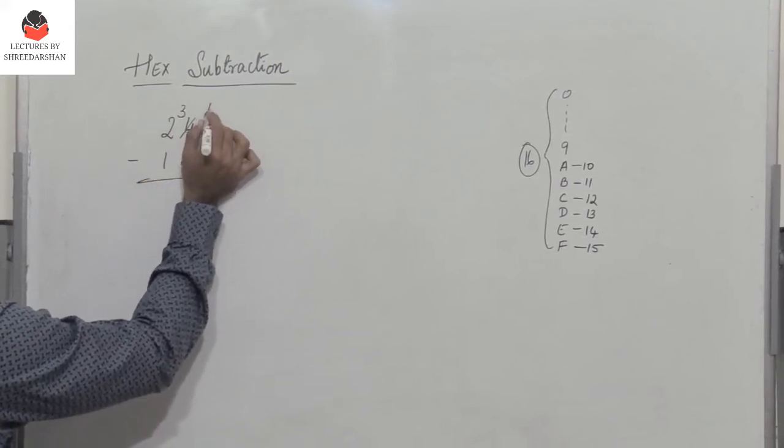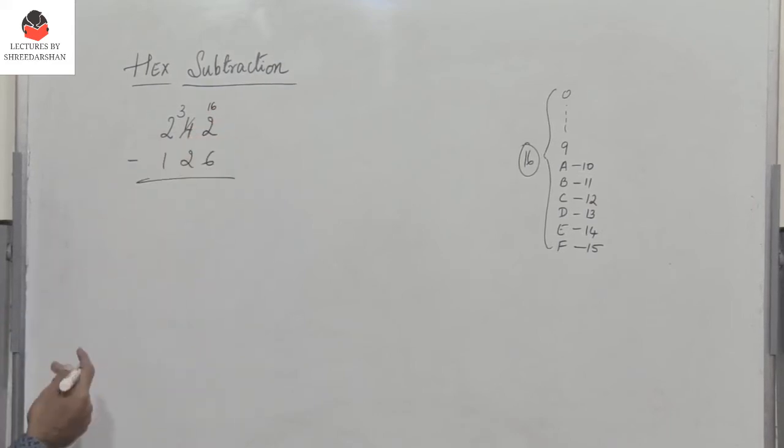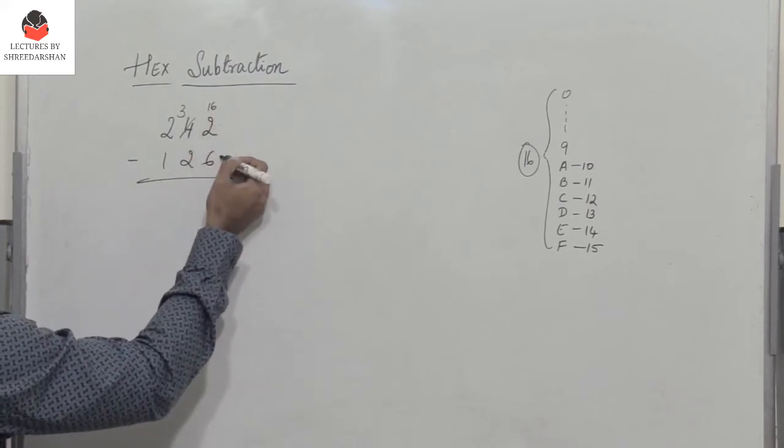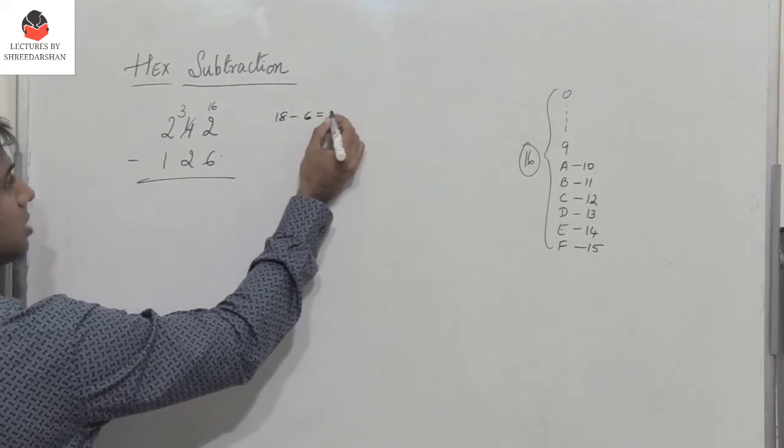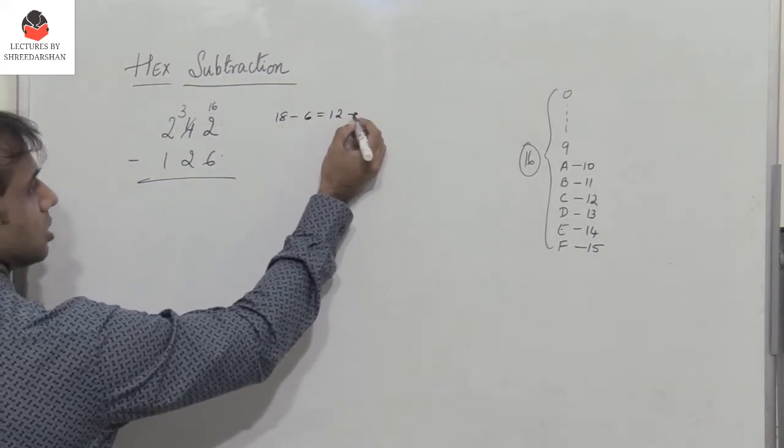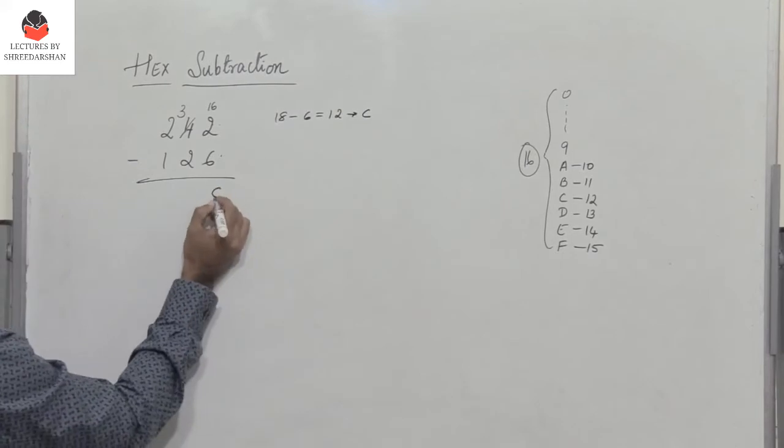When I borrow, I have to add 16 to 2 because we are performing subtraction of two hex numbers. This becomes 18 minus 6. 18 minus 6 is 12, which is C. So I write C here.